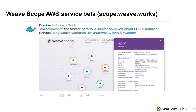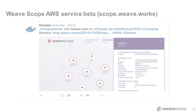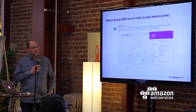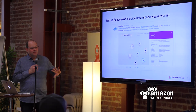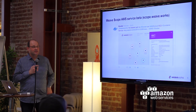We also have a beta of a cloud service version of Scope, running on AWS today and using Kubernetes as the scheduler. It gives you an idea of how we can use this technology to build microservices and make things run faster and easier on ECS.